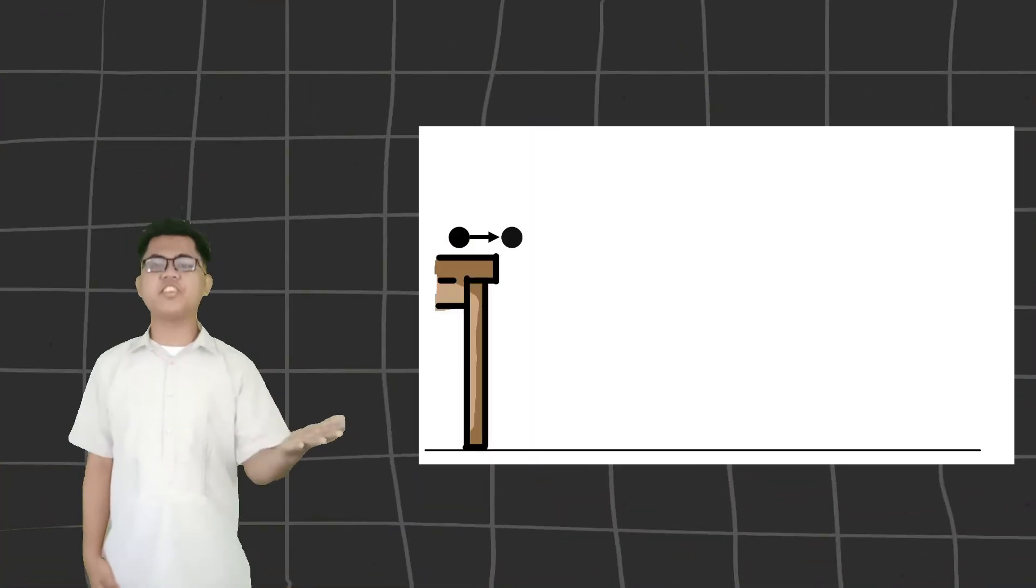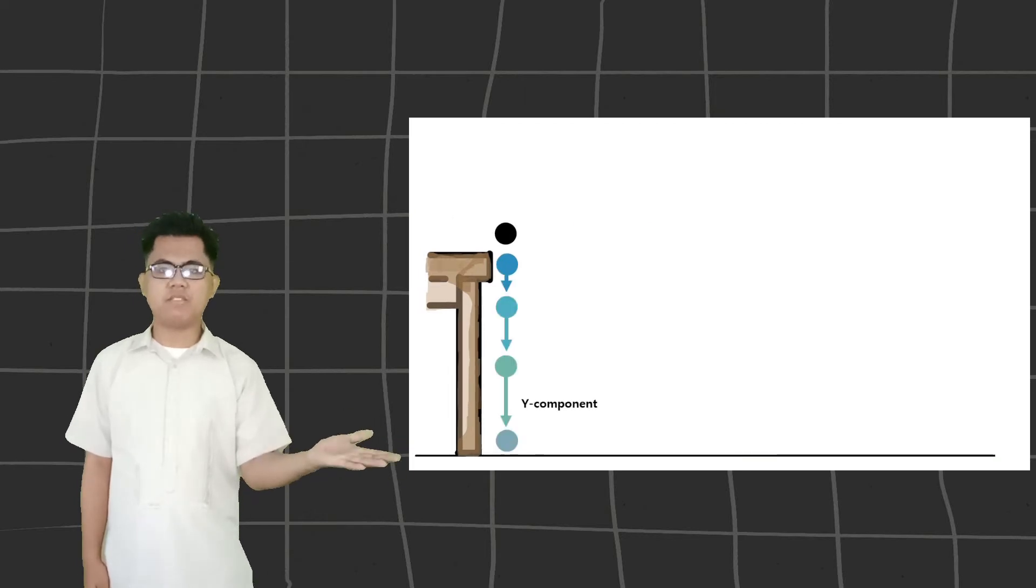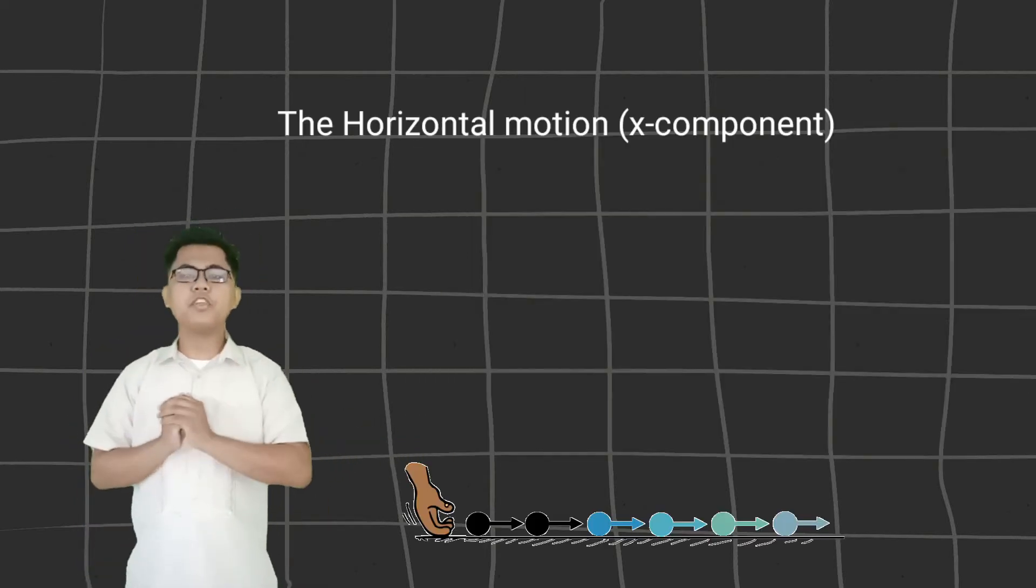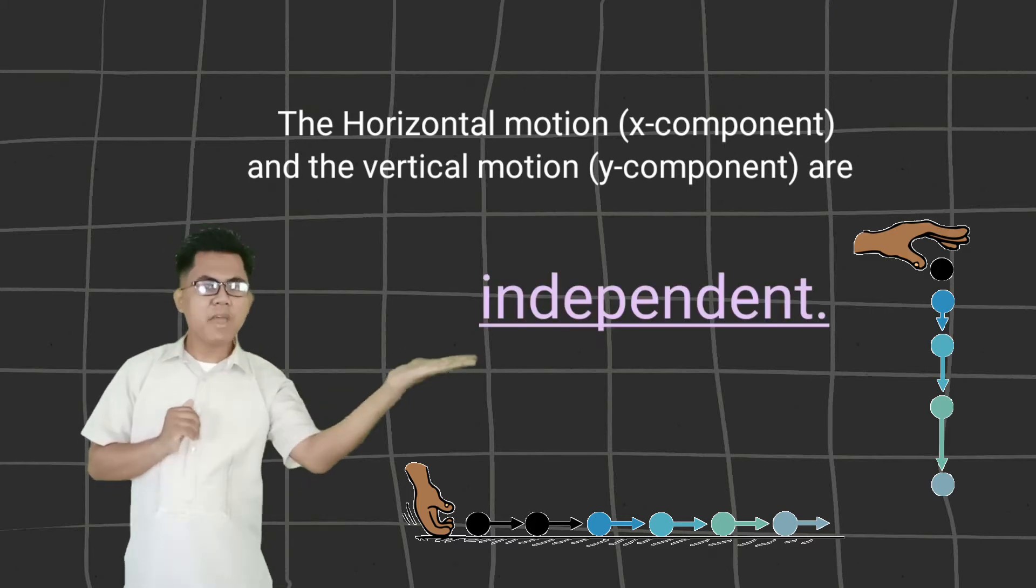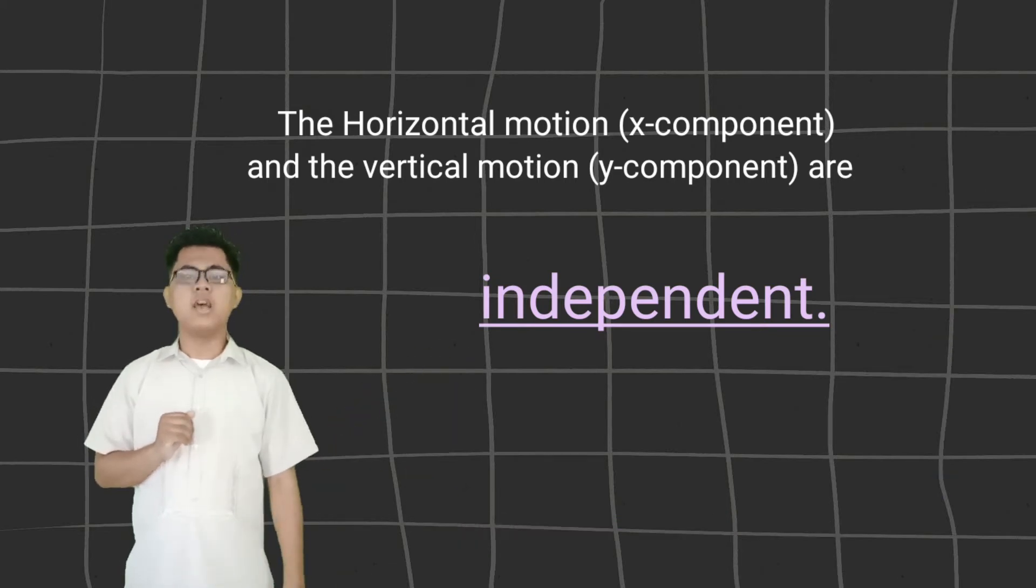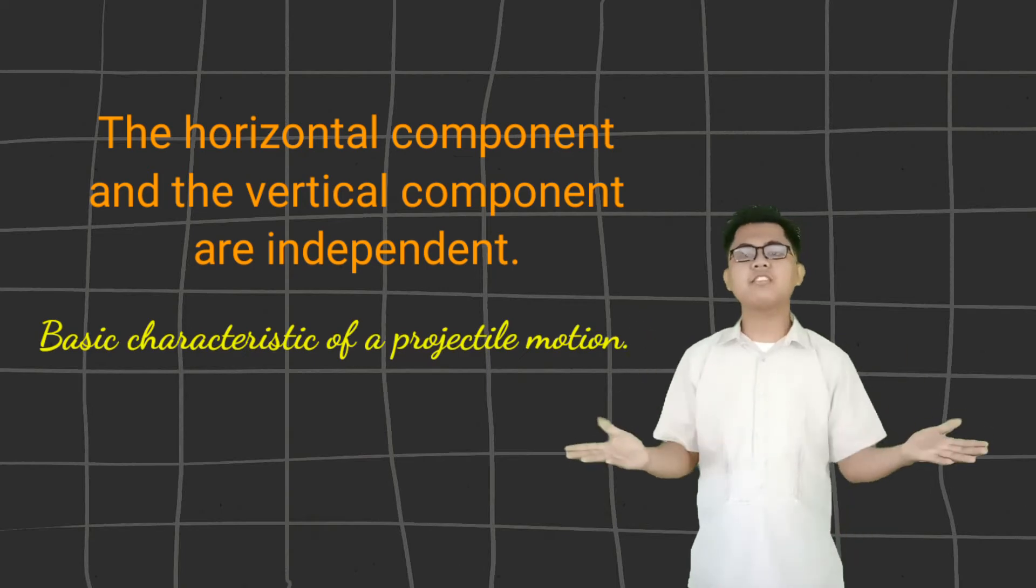But first, if we look at the motion of our projectile, it's quite complicated. But we can actually describe its motion by separating its horizontal motion and vertical motion. The horizontal component and vertical components of a projectile motion are independent to each other. This is the basic parameter of a projectile motion.